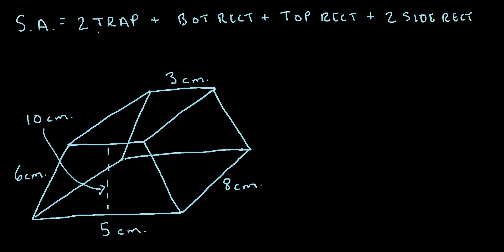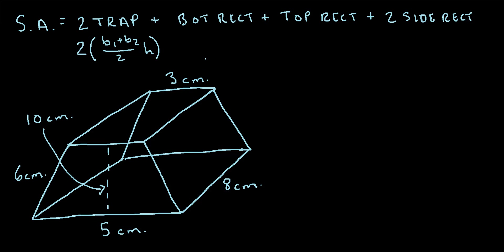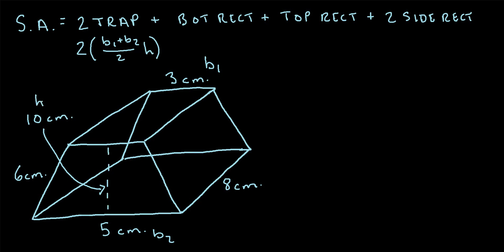Let's start with the trapezoids. The formula to find the area of a trapezoid is: (base one plus base two) divided by two, times the height. In this case, base one is the shorter base, which has a length of three — let's call that base one. Base two is the longer base, which is five centimeters — let's call that base two. And the height is given as 10 centimeters.